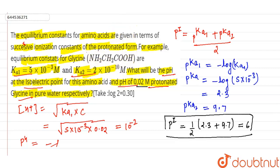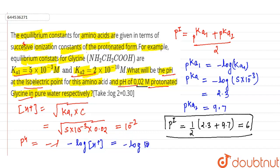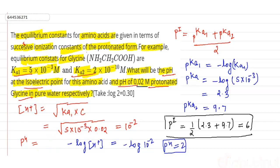We know that pH = −log[H⁺], so pH = −log(10⁻²) = 2. So the pH of 0.02 molar protonated glycine is 2. This is our answer.